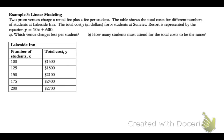So here's another situation. Two prom venues charge a rental fee plus a fee per student. The table shows the total cost for different numbers of students at Lakeside Inn, that's one venue possibility. The total cost y in dollars for students at Sunview Resort, another possibility, is represented by this equation.